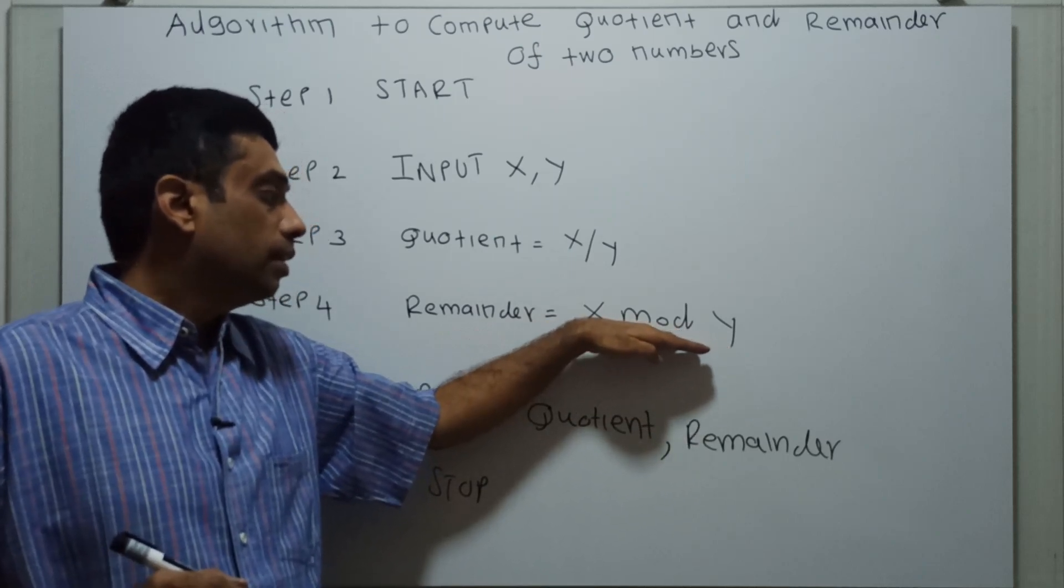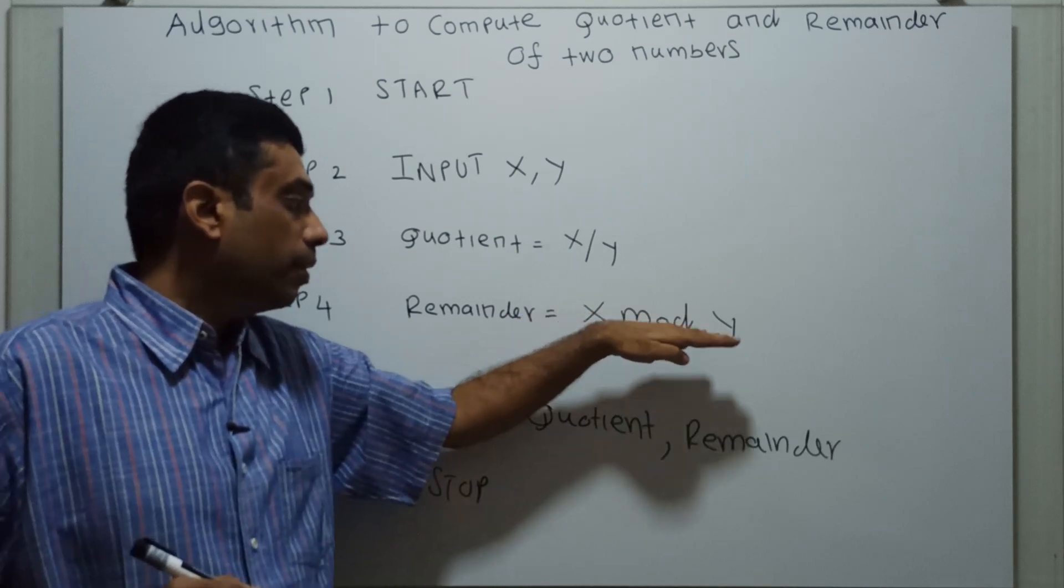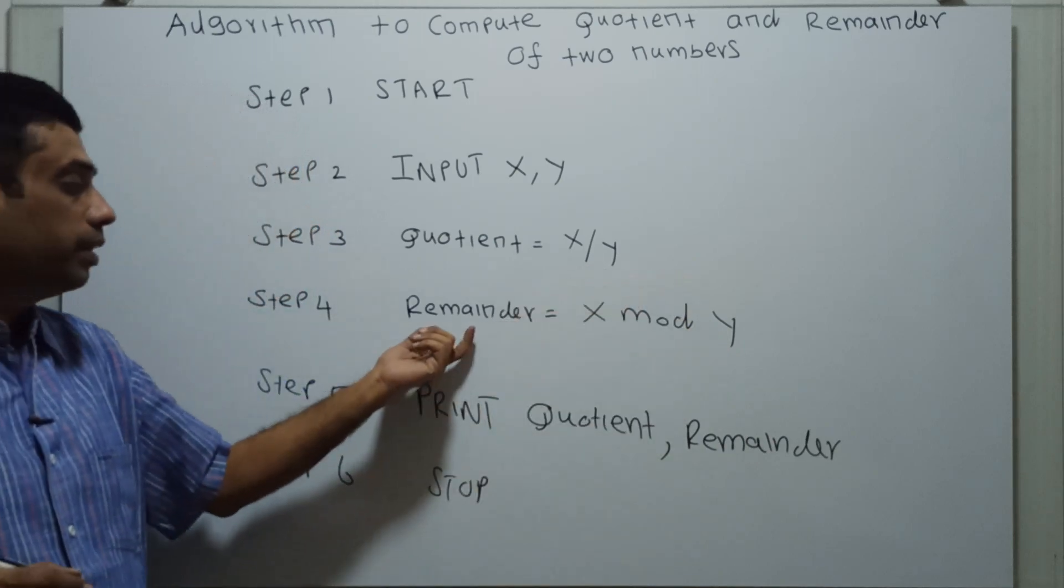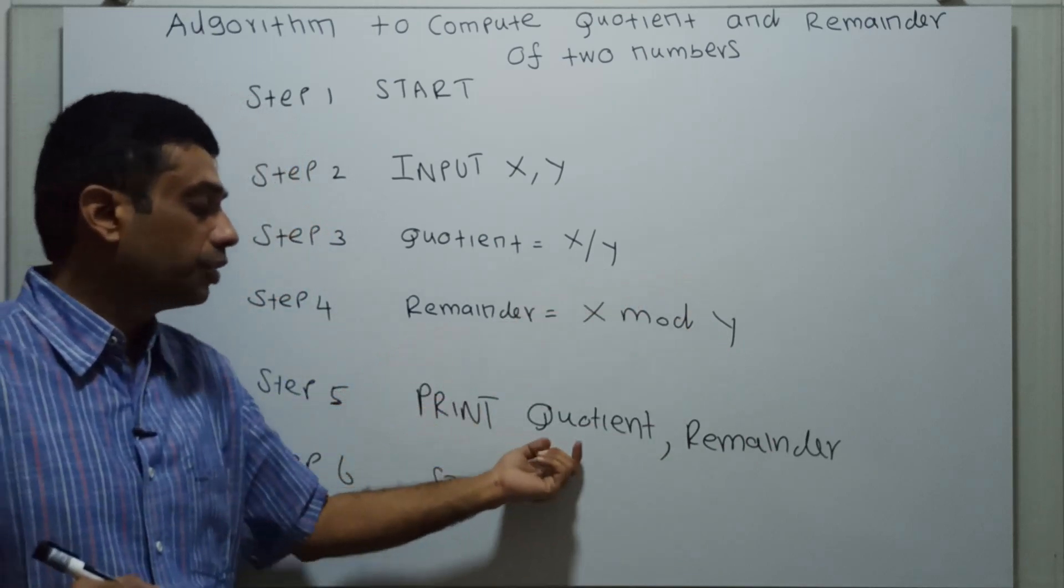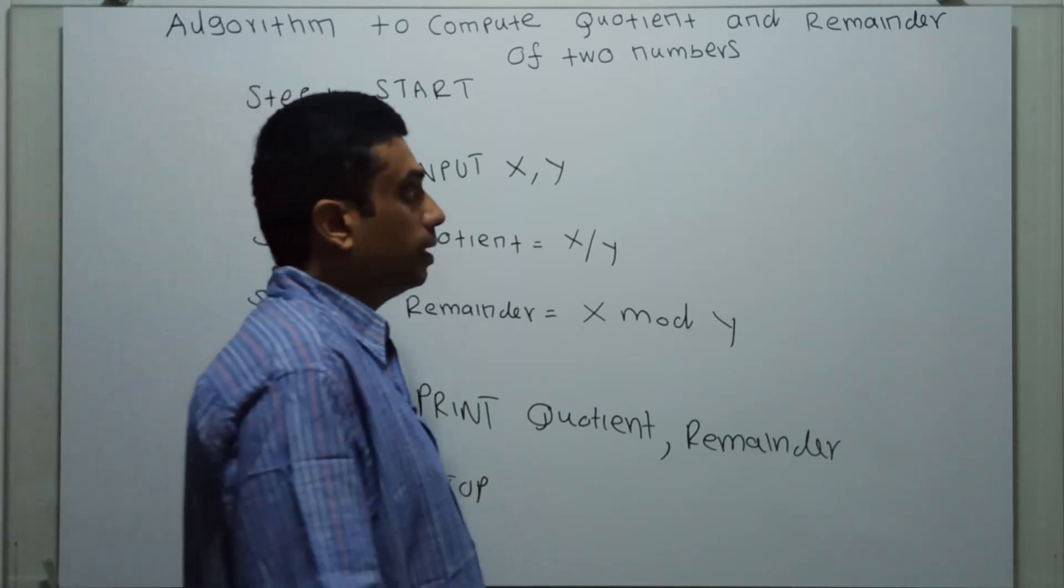The mod operator returns the remainder. That means the x is divided by y. The remainder will return by the mod operator. That will be stored in the remainder. I am printing quotient and remainder. And this is the logical end of the algorithm.